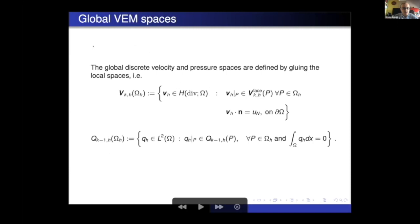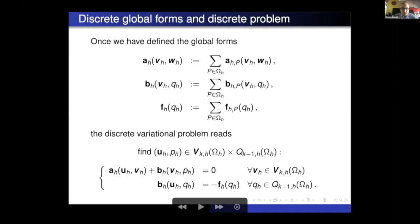Then we can go to the global spaces. The global spaces where we are looking for the solutions are just obtained gluing the local spaces. Note that the pressures are discontinuous. OK, so in the low order case, the pressures will be piecewise constant, then P1 discontinuous and so on. The global bilinear forms are just obtained by summing the local ones. And here we have our discrete problem.